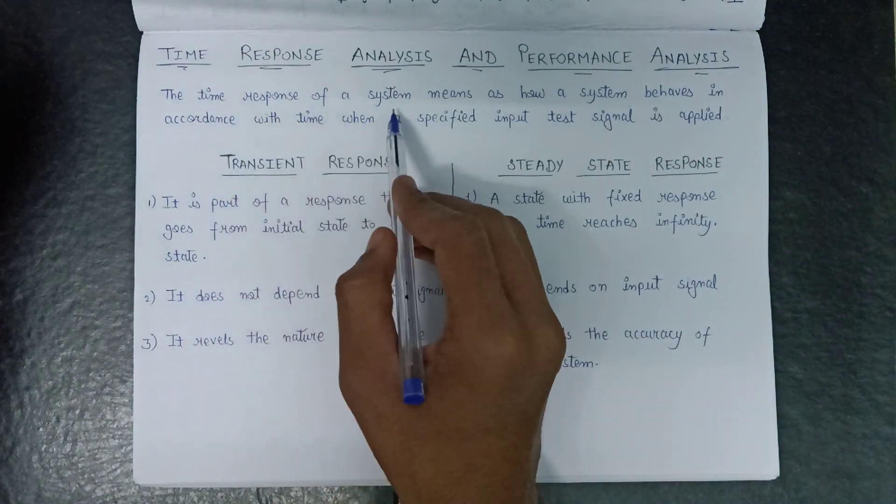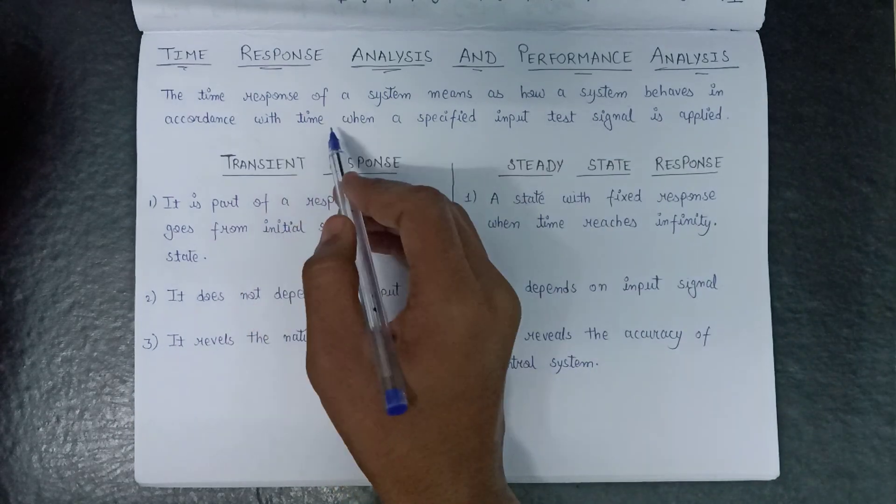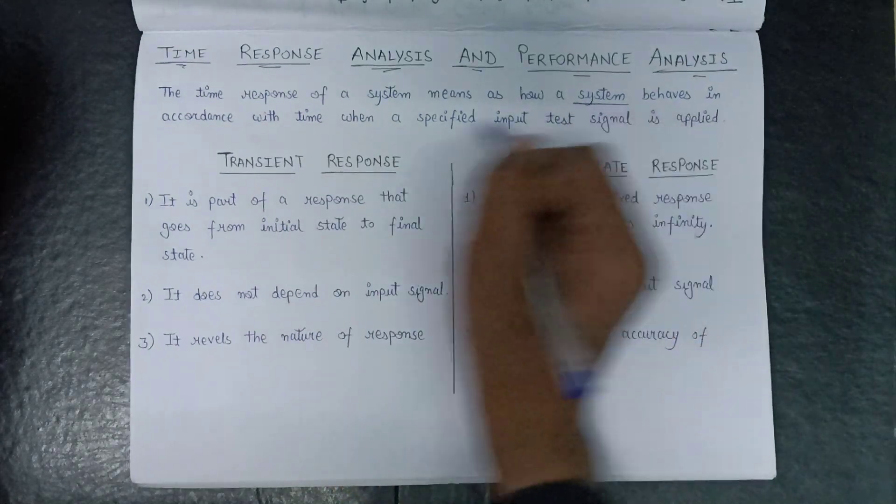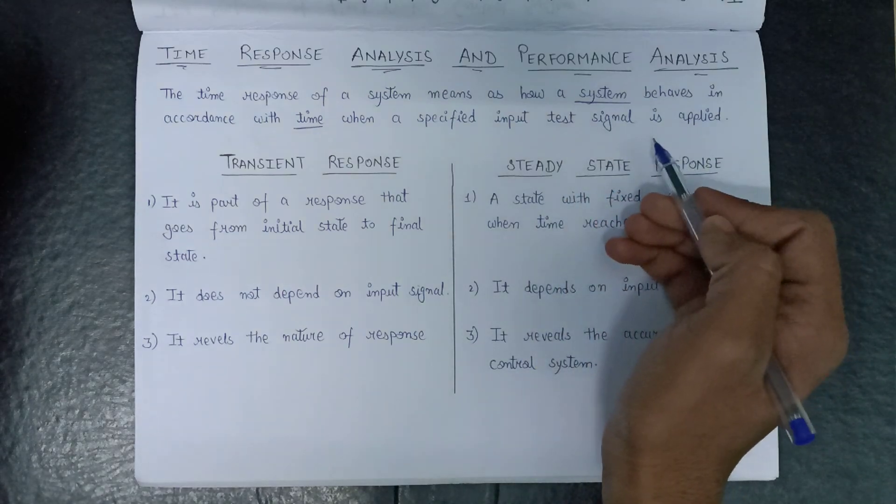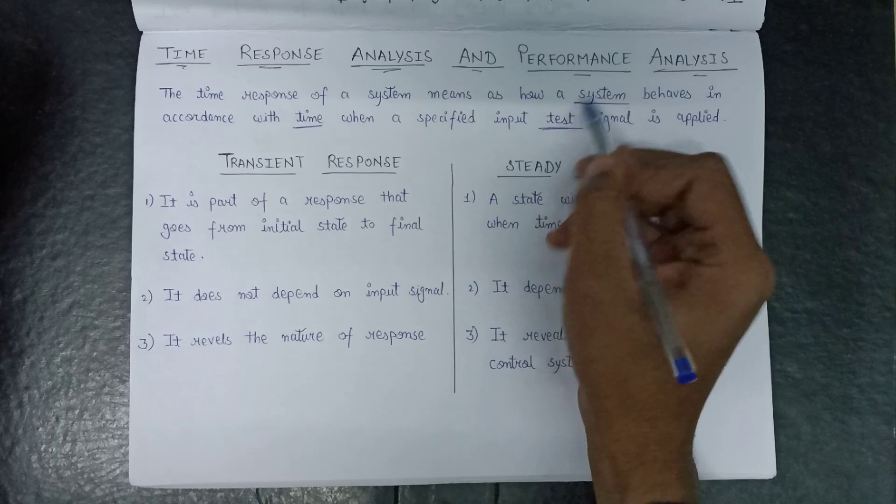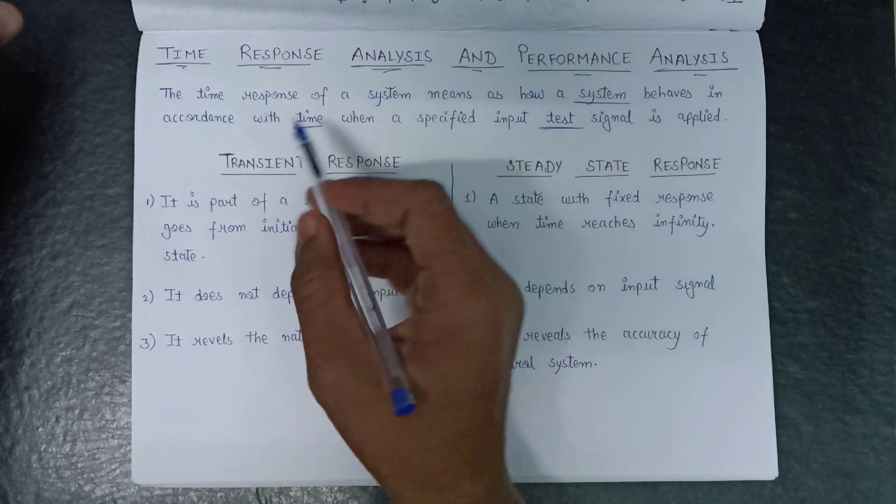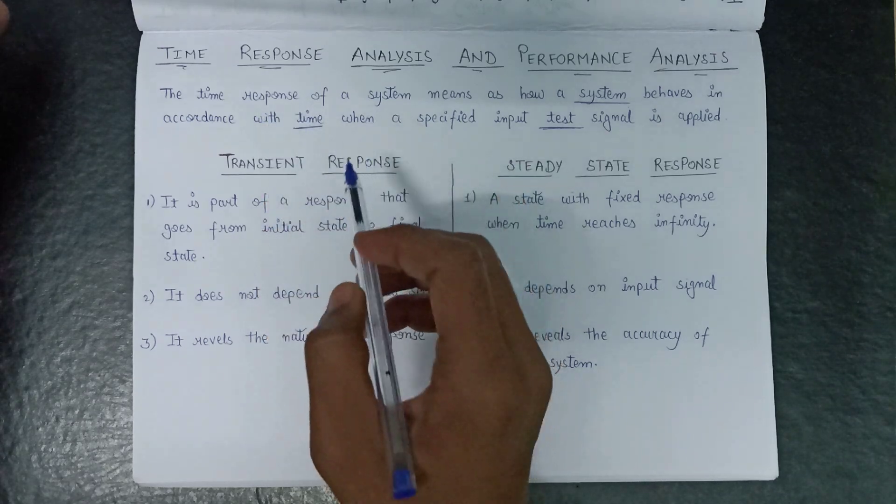The time response of a system means how a system behaves in accordance with the time when an input test signal is applied. So if we apply an input test signal to a system, then the behavior of a system in accordance with the time is known as time response of that system.